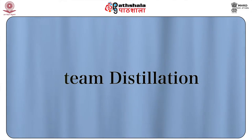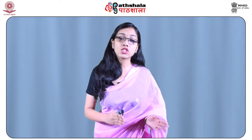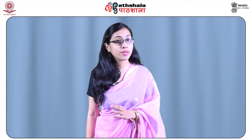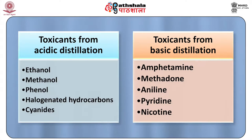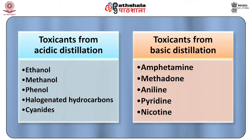Steam volatile substances can be separated or isolated from blood, urine, and properly minced viscera by steam distillation. Steam is passed into the sample and the aqueous distillate is collected by the process of condensation. Toxicants from acidic distillation include ethanol, methanol, phenol, halogenated hydrocarbons, cyanides, etc. On the other hand, toxicants from basic distillation include basic drugs such as amphetamine, methadone, and also aniline, pyridine, nicotine, etc.